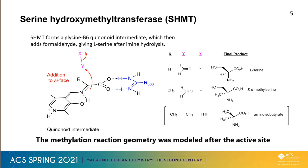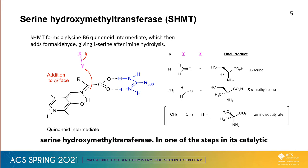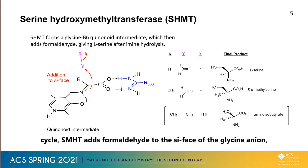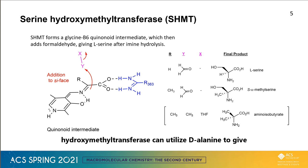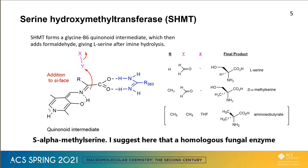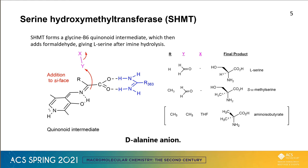The methylation reaction geometry was modeled after the active site of serine hydroxymethyltransferase. In one of the steps of its catalytic cycle, SHMT adds formaldehyde to the C-face of the glycine anion, eventually yielding L-serine. Similarly, a different bacterial hydroxymethyltransferase can utilize D-alanine, giving S-alpha-methylserine. I suggest here that a homologous fungal enzyme could catalyze addition of a methyl group to the C-face of the D-alanine anion.